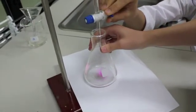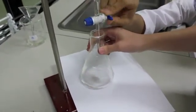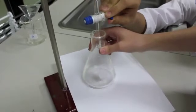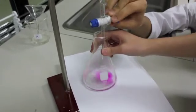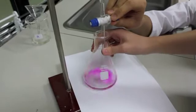Add the titrant in little by little into the flask or beaker. Remember to swirl after each addition. The point that the color changes permanently is your endpoint. Keep going until you reach that point.